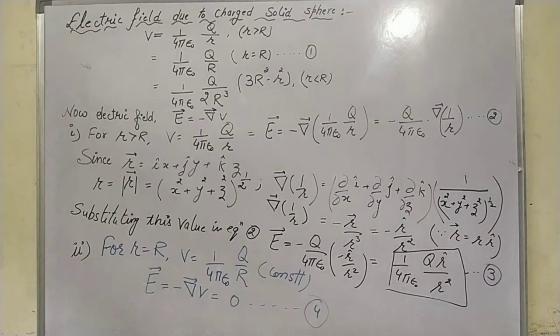The first case is R greater than R. In this case, E is equal to 1/(4πε₀) × q/R.